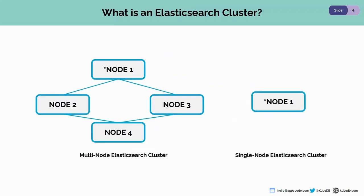What is an Elasticsearch cluster? An Elasticsearch cluster is a group of nodes with the same cluster name. It starts with a single node — a single node can form a single-node Elasticsearch cluster — and later nodes can join and leave the cluster, and Elasticsearch will automatically distribute the data based on current status throughout the nodes. Each of the nodes is assigned with a specific role such as master, data, or ingest. Each node can have one or multiple roles based on the requirement.